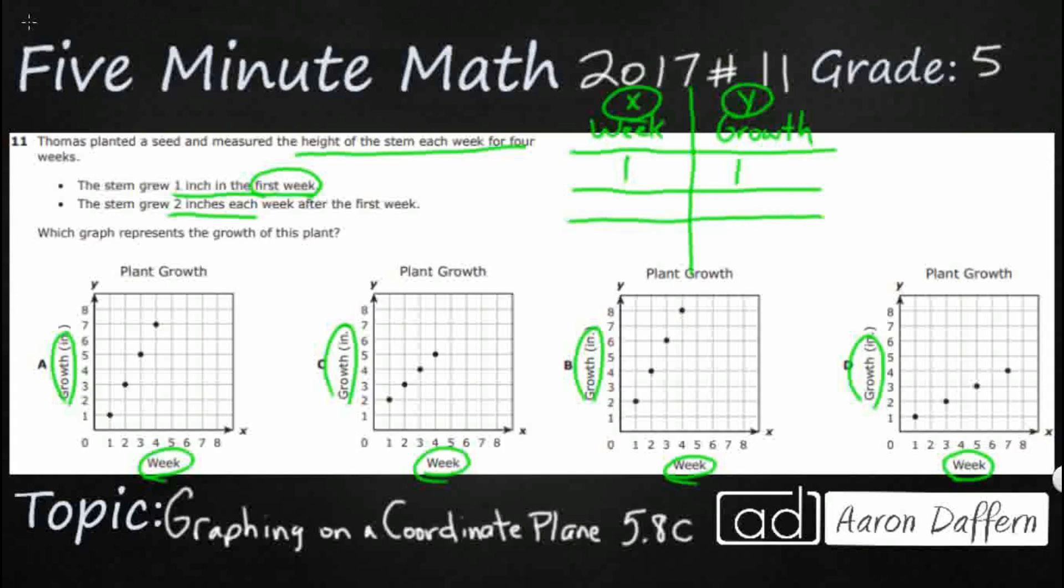Then we're just going to go week to week. So let's just go 2, 3. Some of these go past four. Let's go to four. And then we'll see. It looks like D goes all the way up to seven. But we'll see what we have here.